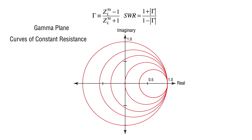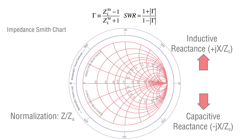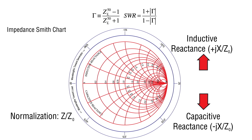All these circles are tangent to the value of 1 along the real gamma axis. Lines of constant reactance are circular arcs that have one end terminating on the value of 1 on the real gamma axis. Inductive reactances are above the real axis, and capacitive reactances are below the real axis. Here is a complete impedance Smith chart with both constant resistance and constant reactance curves.